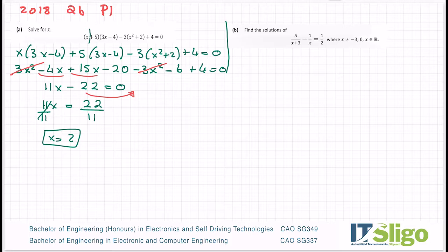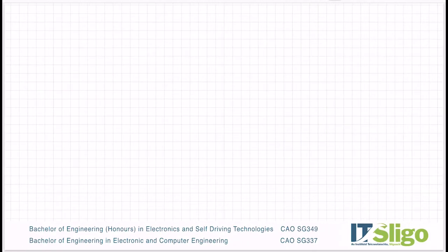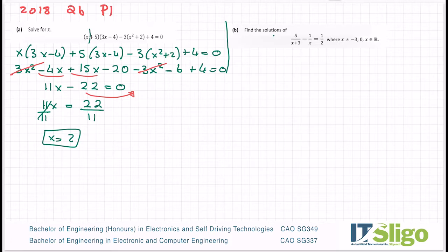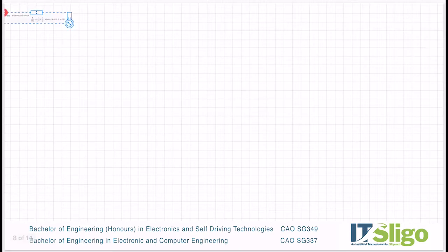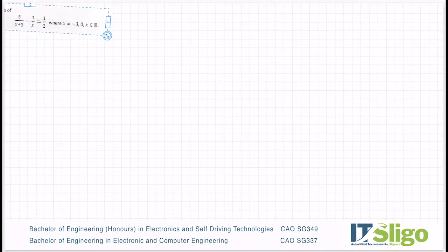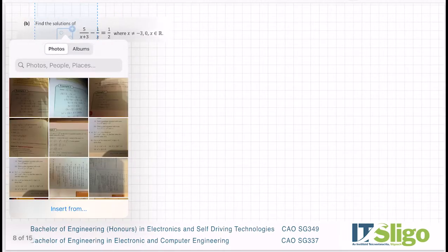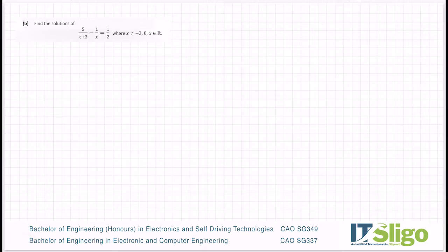So that was that first part. Now the second part, there's two ways of doing this. And I'd like to show you both ways. So find the solutions of 5/(x+3) - 1/x = 1/2. Well, generally with algebraic expressions, we need a common denominator.